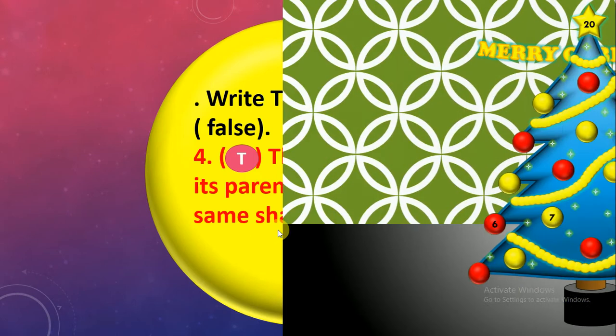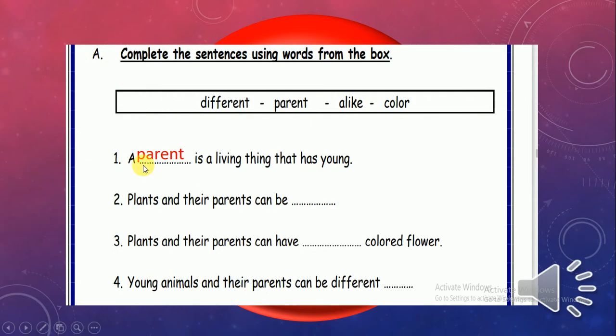Okay, number 6. Back again to complete the sentences using words from the box. Plants and their parents can be... I like. Excellent.